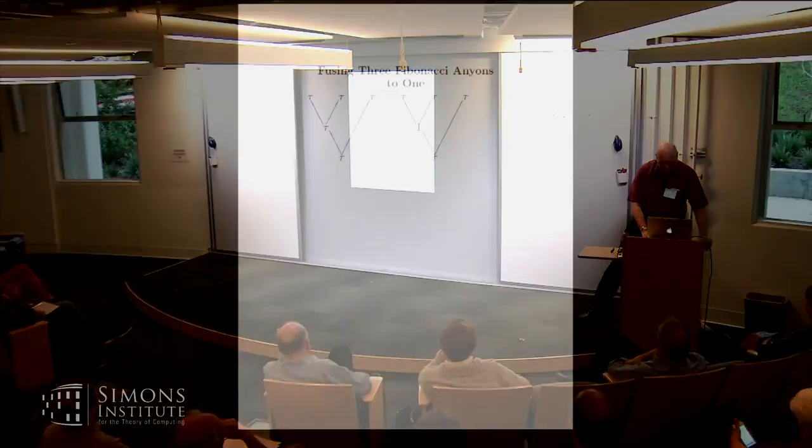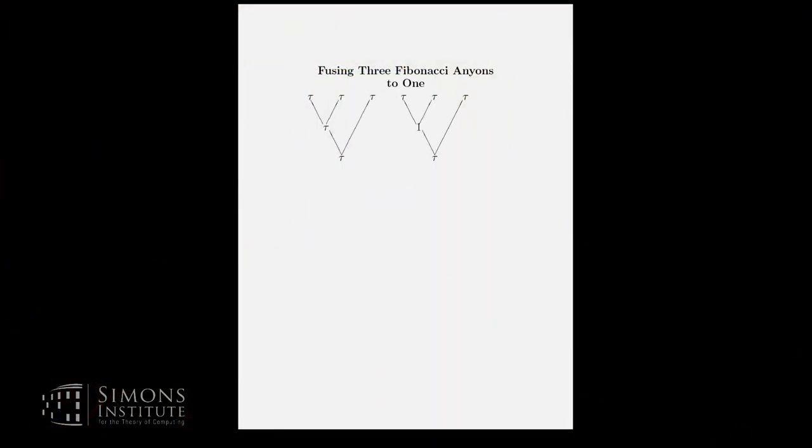Let's see. If three Fibonacci anyons, here are the two, here are two ways to fuse them to one Fibonacci anyon. In these pictures, I'm fusing the left pair first. It can produce either another Fibonacci anyon or a vacuum. And whichever it produces can then fuse with the one on the right to produce another Fibonacci anyon.